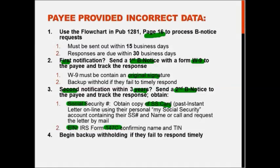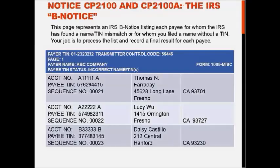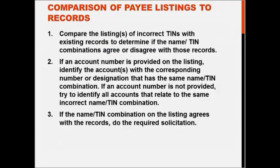The B notice process involves comparing the payee listings from the IRS to your own records. You're looking at your databases to determine whether you have the same information in your system as appeared on the 1099s and came back from the IRS. If the information matches, work back to the W-9 and check that the W-9 information was entered into your system exactly as written. If the information disagrees, fix your records. If it agrees all the way back to the W-9, then you have a problem with what the payee submitted — and now you're in the B notice world.